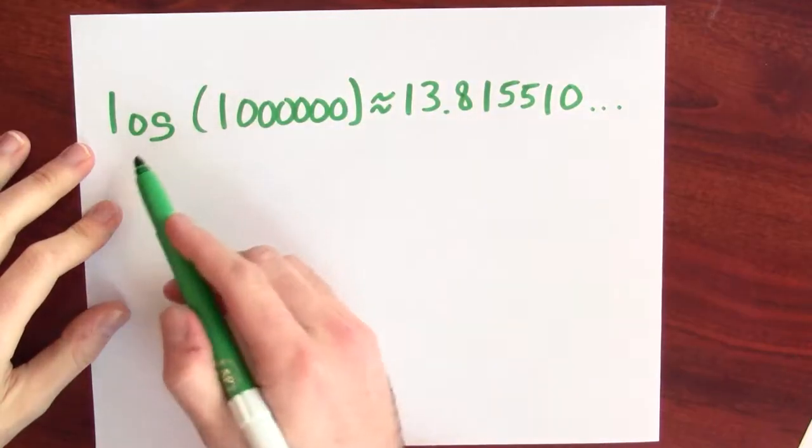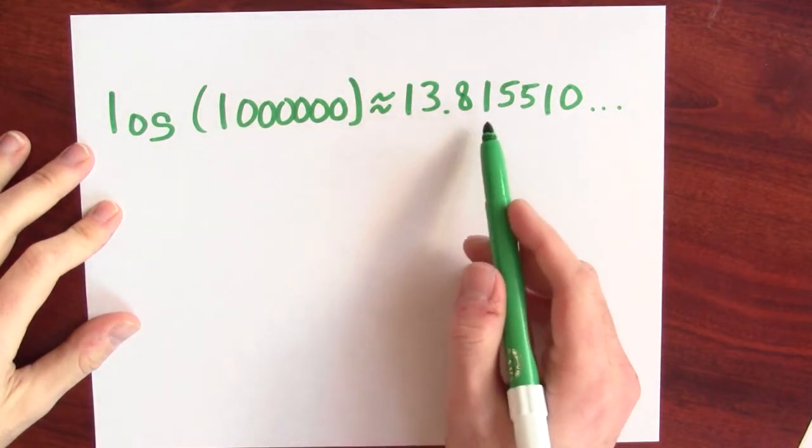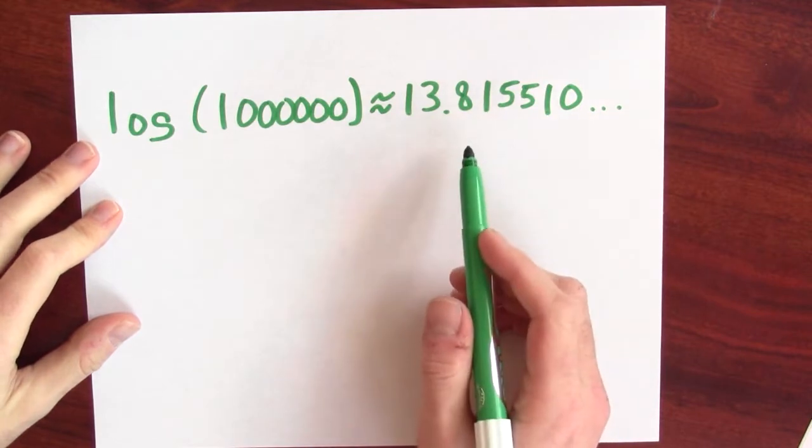Think about log of a really big number. For instance, what's log of a million? Log of a million is about 13.815510, and of course it keeps going. It's an irrational number.